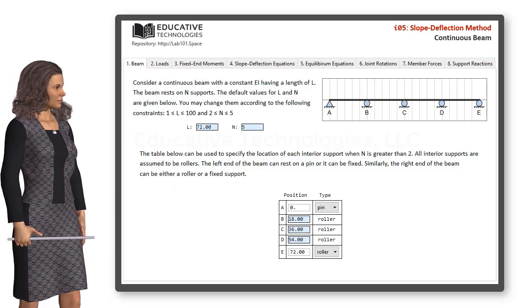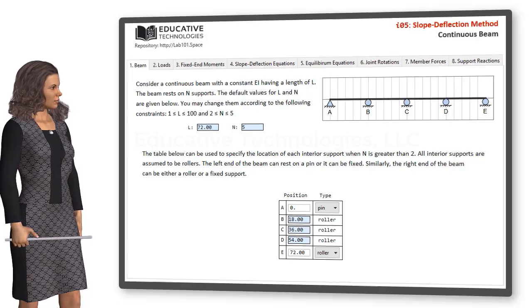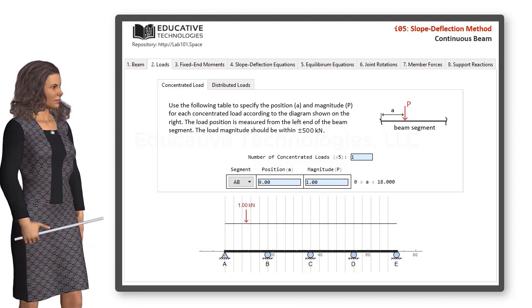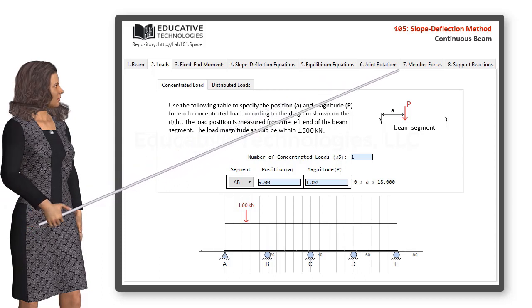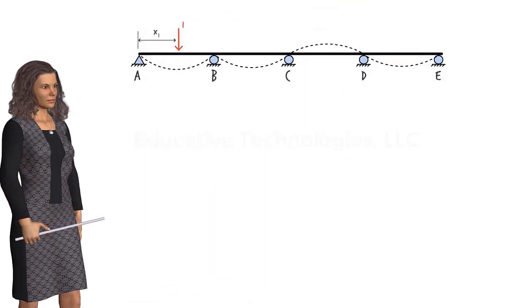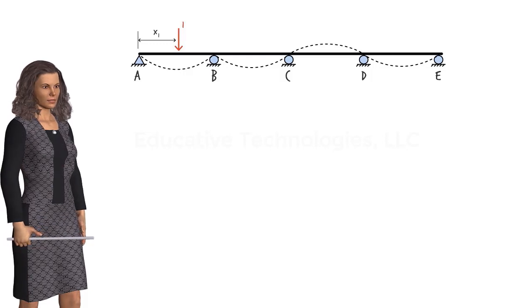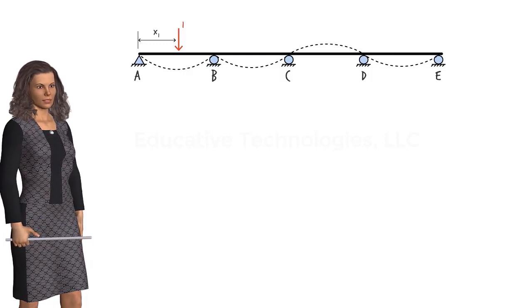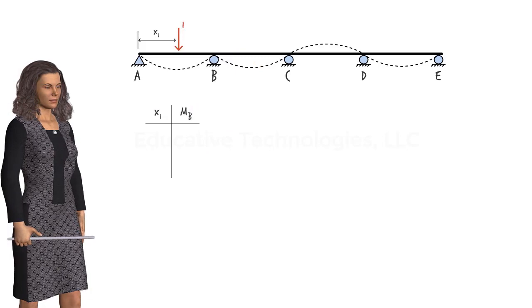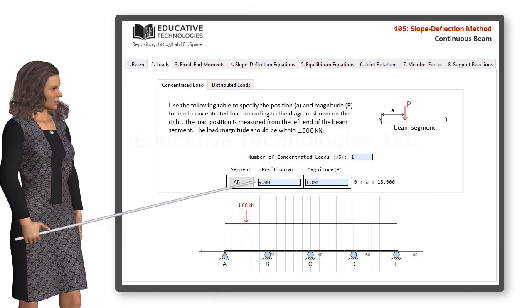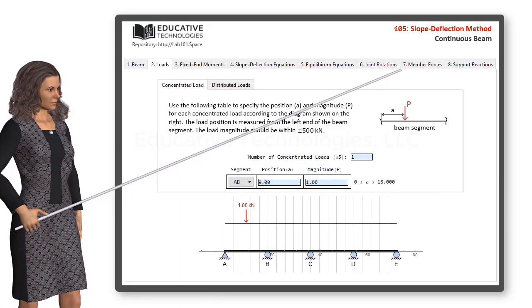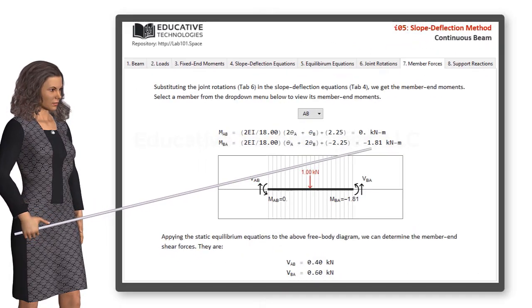The application is an interactive notebook that allows us to specify the beam configuration and the applied loads. It then gives us the details of the slope-deflection formulation for analyzing the beam including joint rotations, member end moments, and shear forces, and the support reactions. In this case, we are only interested in bending moment values at the right end of segment AB. Let's start by determining the bending moment at B due to a unit load placed at the midpoint of segment AB. Using the app, we can define the position and magnitude of the applied load easily. Then, we read the value of the moment at B under tab 7. It is negative 1.81.